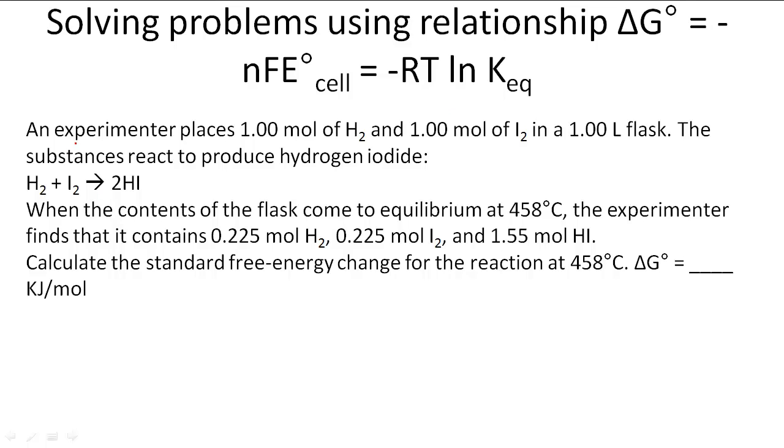In this problem, an experimenter places 1.0 moles of H2 and 1.0 moles of I2 in a 1 liter flask, and the substances react to produce hydrogen iodide.